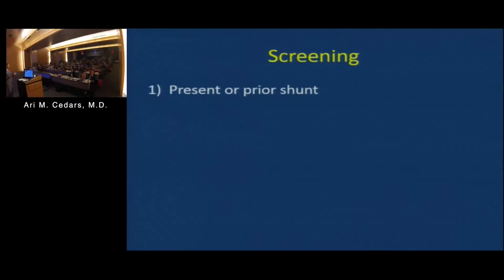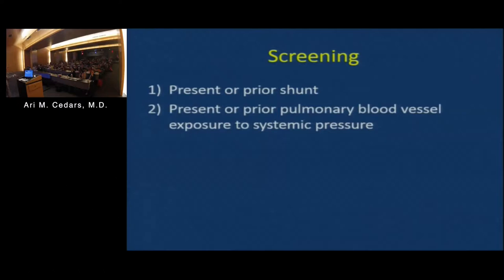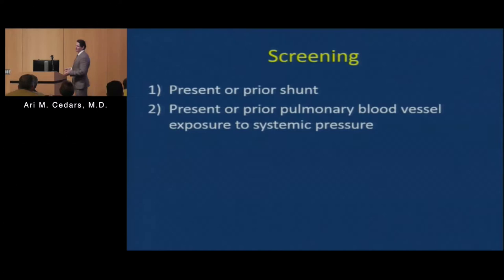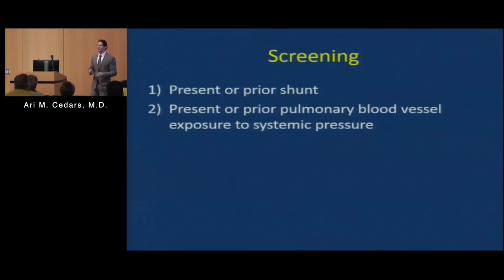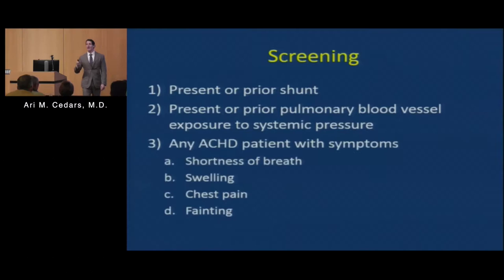Based on this, it's fairly obvious who needs to be screened for pulmonary hypertension: anybody who currently or at any previous time has had elevated levels of pulmonary blood flow, or anybody who currently or previously has had elevated exposure of their pulmonary vasculature to elevated pressures. The first time you're seen by an adult congenital specialist, you should probably have a screen. Depending on results and your original lesion, you should have repeated screening once every one to five years. Additionally, given the high prevalence of PH in ACHD patients, anybody with symptoms consistent with pulmonary hypertension should also be screened.